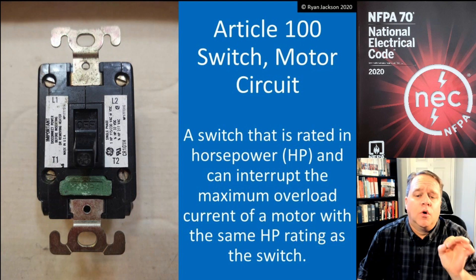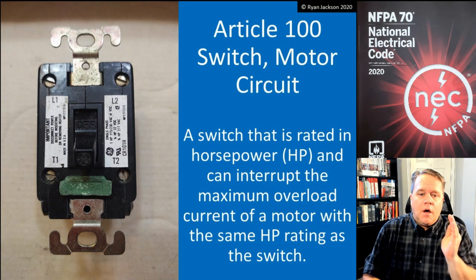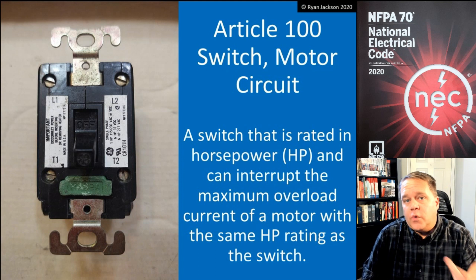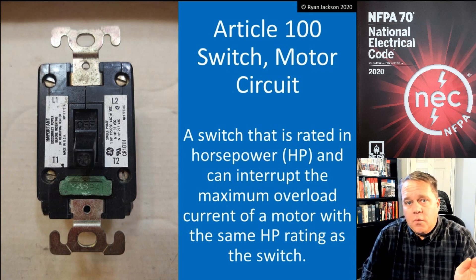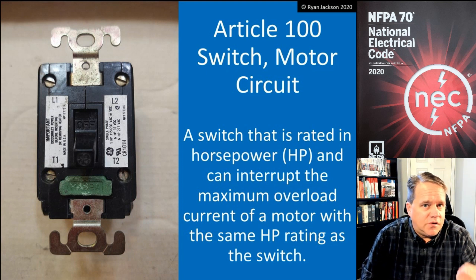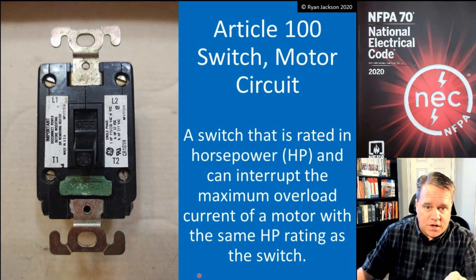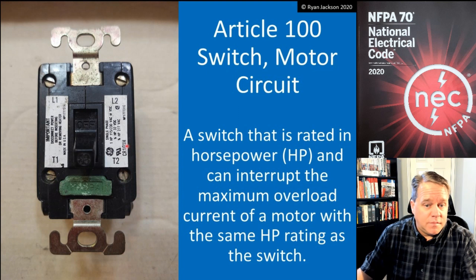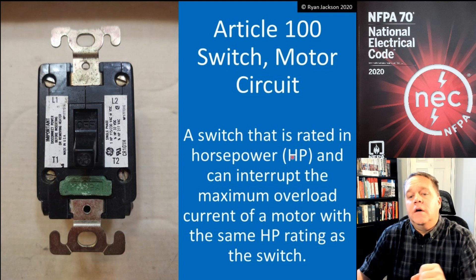A motor circuit switch can interrupt the maximum overload current of a motor with the same horsepower rating as the switch. If it's rated one horsepower at 120 volts, a one-horsepower motor at 120 volts draws about 16 amps. An overload on that motor would be 115–125% of that, so about 20 amps. This switch should be able to interrupt 20 amps. Most importantly, it must have that horsepower rating to be a motor circuit switch.